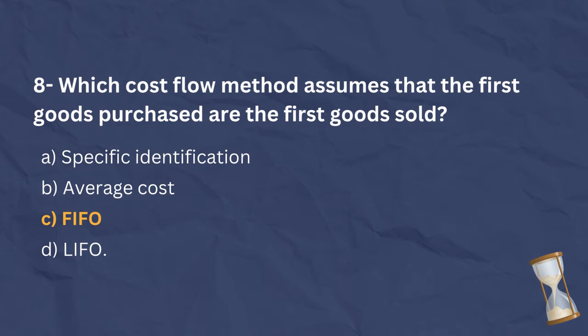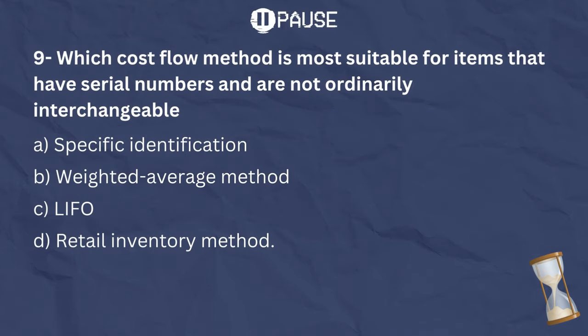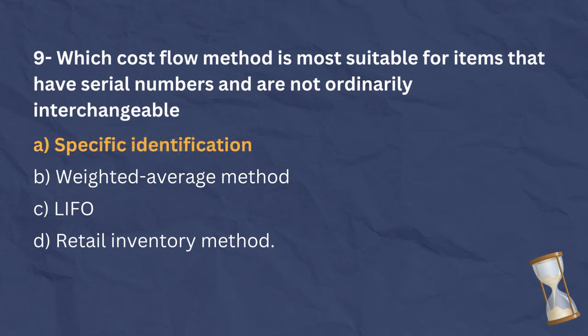The correct answer is A. Specific identification is appropriate for items that are not ordinarily interchangeable and have specific identification such as items with serial numbers. It involves determining which particular items are sold, reflecting the actual physical flow of goods.